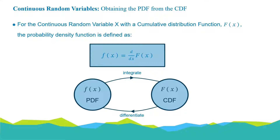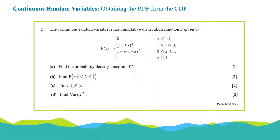Let us look at this example. The continuous random variable x has a cumulative distribution function F given by: F of x equals 0 for x less than minus 1; one half of (1 plus x) squared for x between minus 1 and 0; 1 minus one half of (1 minus x) squared for x between 0 and 1; and 1 for x greater than 1.